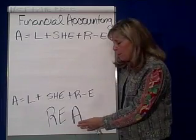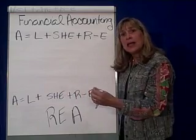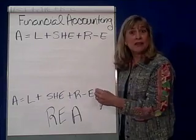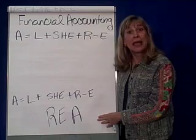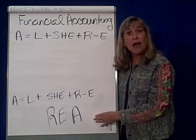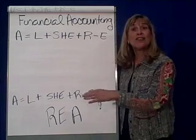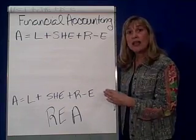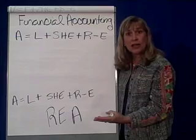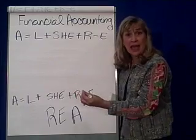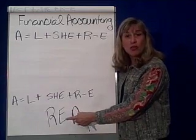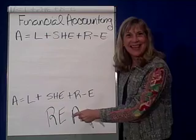For example, if I sell something, is the sale recorded when I make the sale, or when I receive the cash? If I'm a cash basis person or business, I will record that event when I receive the cash. Likewise, if I am a cash basis person and I buy something, I don't record it until I give the cash. So cash basis is when the cash changes hands — that's the event.